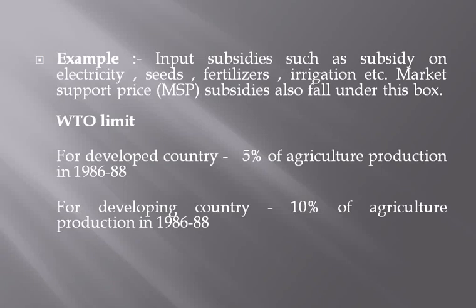The WTO has given certain limits for amber box subsidies. For developed countries, the limit is 5% of agriculture production based on 1986-88 base prices. For developing countries, it is 10% of agriculture production. India is currently not in agreement on this part.